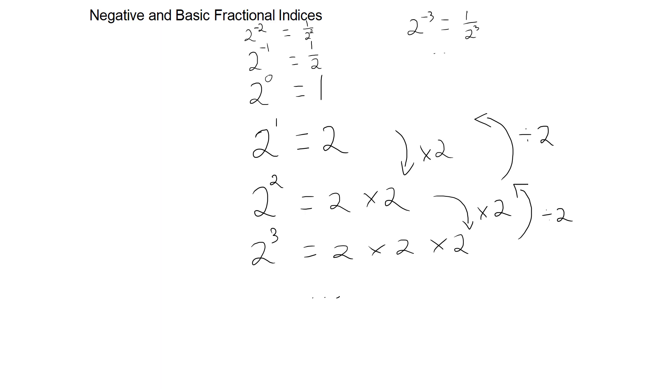So we should start to notice a pattern emerging, which is that if I have 2 to the power of minus n, I will get 1 over 2 to the power of n. And there's no reason why this doesn't work for any base number. So we have the general rule that a to the minus n is 1 over a to the power of n.